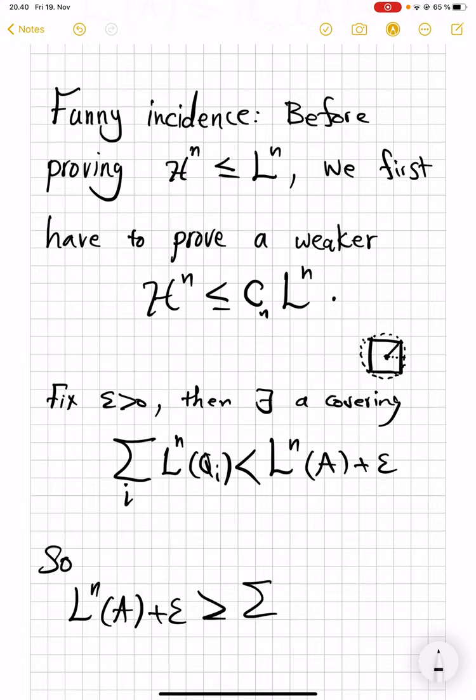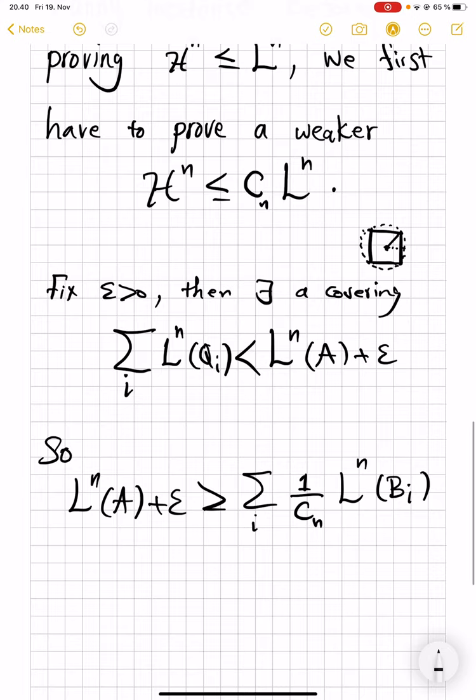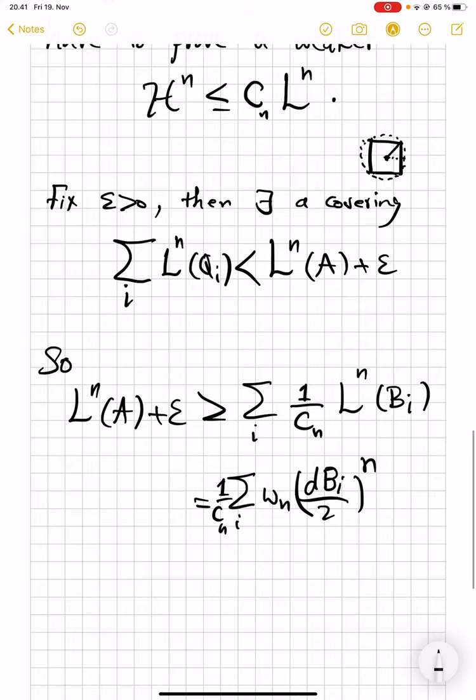Now, from this picture that there is a ball containing this cube with that control on the diameter, this will be, so let me write the right hand side, this will be bigger than or equal to summation over i, divide by this constant, and then the big measure of the b_i, so replace the cube with the ball. But this is just equal to 1 over c_n ω_n, because we know measure of balls is diameter of the ball over 2 to power n. And this b_i is also a covering of my set A, and therefore, by definition, this summation is bigger than H^n_∞ of A.